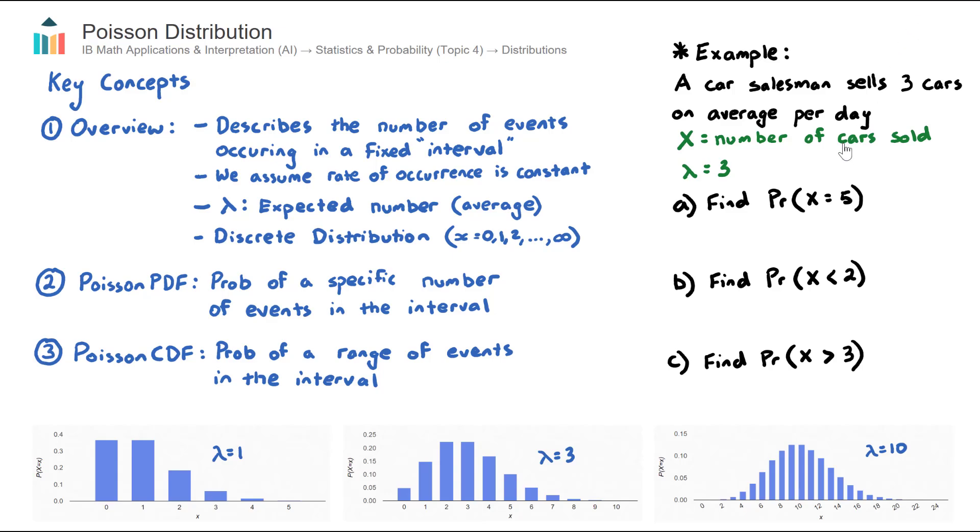When you start a Poisson Distribution question, it's important to define two things. First is your discrete random variable, which we give capital X. Usually it's some sort of capital letter, and the most common one is X.